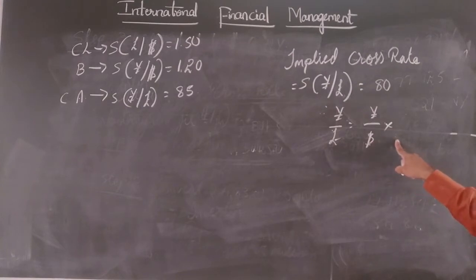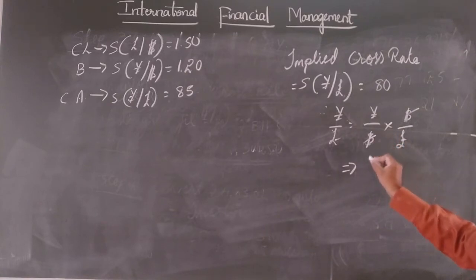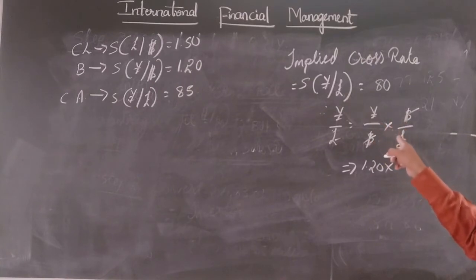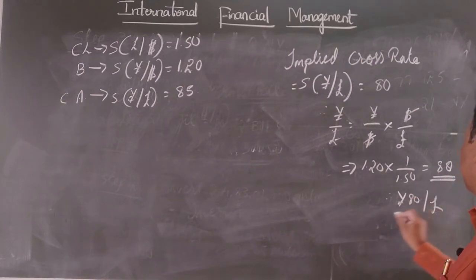Into, again we have yen by pound we have and then we have yen by dollar we have and then what we should have? Dollar should get cancelled and we should have pound in the denominator, pound by dollar. So dollar will get cancelled, we get the answer over here. For your information, yen by dollar is 1.20 into dollar by pound, 1 divided by 1.50, the answer comes to 80.